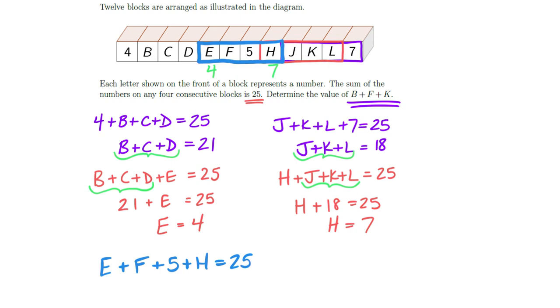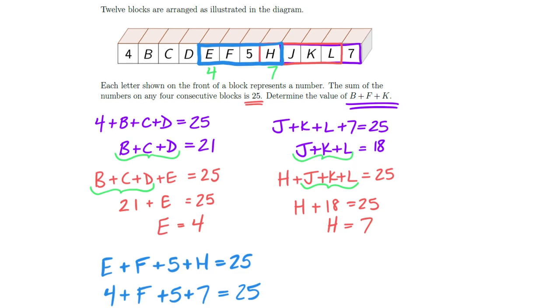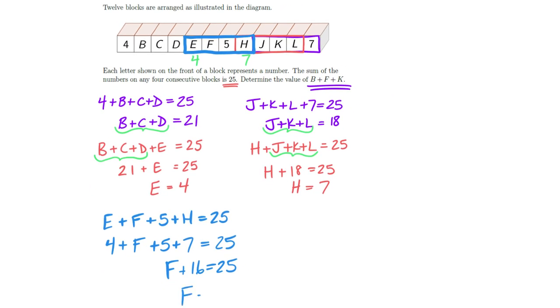And so now I can really pick up the pace. I know that E plus F plus 5 plus H has to give me 25. But I also know what E and H are. I know that E was 4. And I know that H was 7. And so if I go through and I take a peek at that, well, on the left side of that equal sign, I've got my 4 plus my 5 plus my 7. That's a 16. So something plus 16 has to give me 25. And if I shrink that down a touch more, I just found out that F was 9.